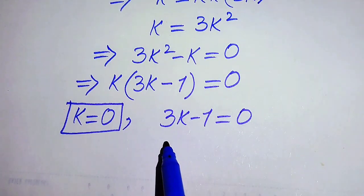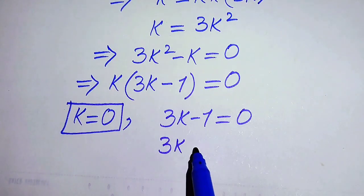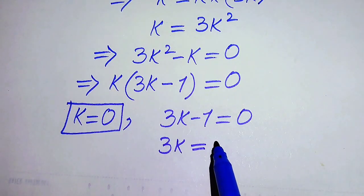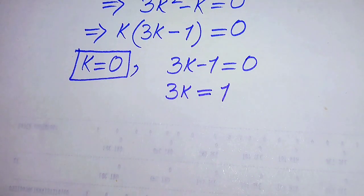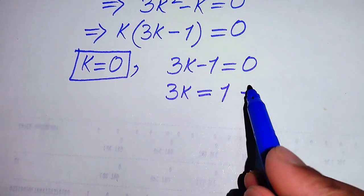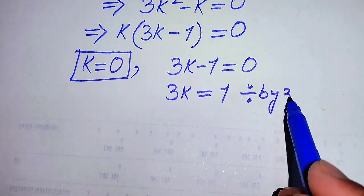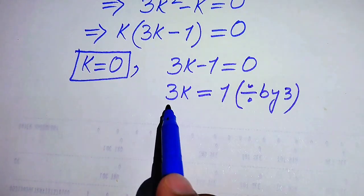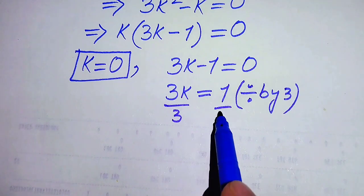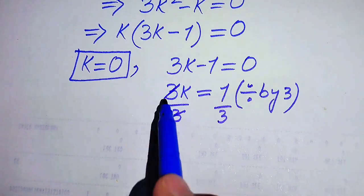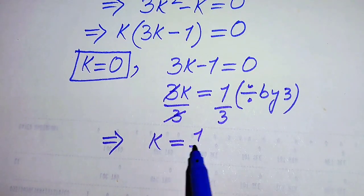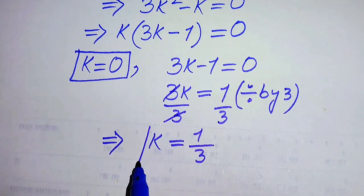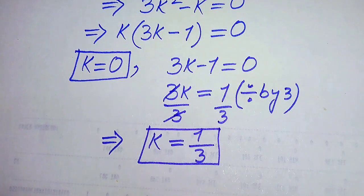We move minus 1 to the right-hand side, giving 3k equals 1. Dividing both sides by 3, the threes cancel and we get k equals 1 over 3. So the two values of k are 0 and 1/3.